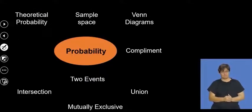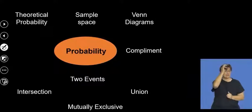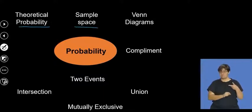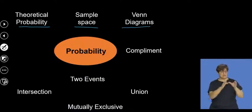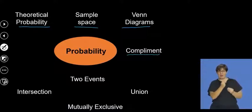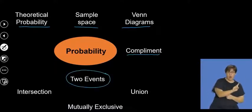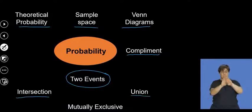In our concept map we're going to be covering certain things. We're going to be looking at the idea of theoretical probability, what is a sample space, and how we can represent that sample space into different events or different sets — which we call Venn diagrams. In terms of the Venn diagram, we also introduce the word complement. We'll discuss that when considering two or more events, which have this terminology of intersection or union.